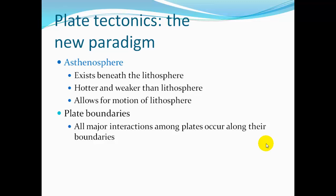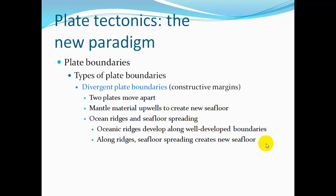Plate boundaries are where different plates interact. The three main types are: divergent plate boundaries, where plates move apart. These are constructive margins where new crust is formed. As two plates move apart, mantle material wells up and creates new seafloor.